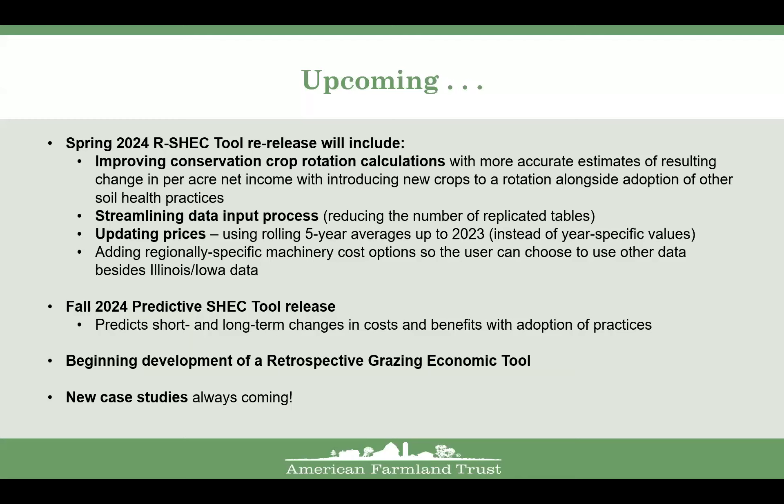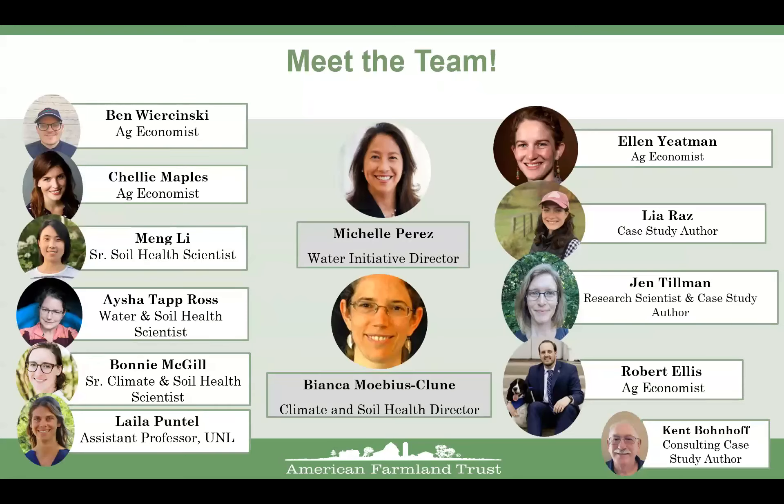In terms of strengths: you can analyze one or multiple soil practices, including grazing or haying of cover crops. It's adaptable to a farmer's specific rotation and field operations. The default data can be updated or changed by the user. It's an Excel-based tool that's easy to download, with no internet required once downloaded. Results are presented in a pre-populated partial budget analysis table that's easy to interpret and can be easily edited and saved.